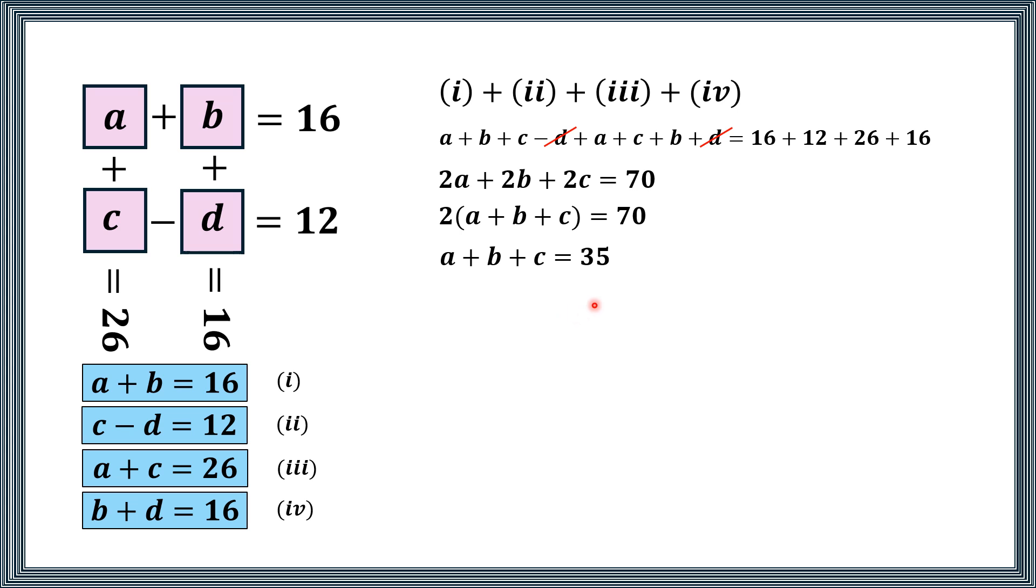Now from equation number one, if we see that we have the value of a plus b that is 16, and we are going to substitute the value of a plus b in this equation. If we substitute the value of a plus b that is 16, then 16 plus c is equal to 35. And taking the 16 on the right hand side, we will have c is equal to 35 minus 16, that is equal to 19. So this c is now replaced by 19.